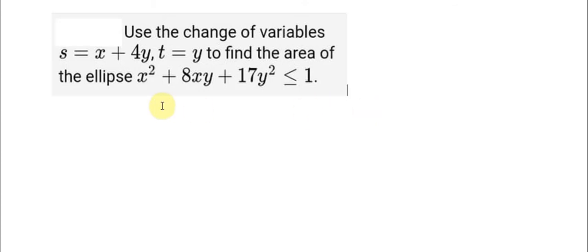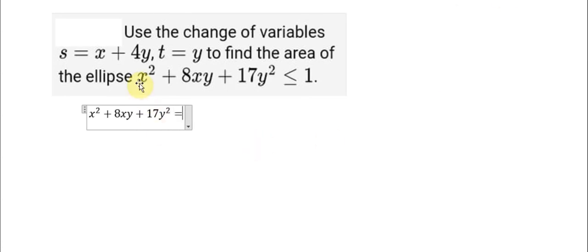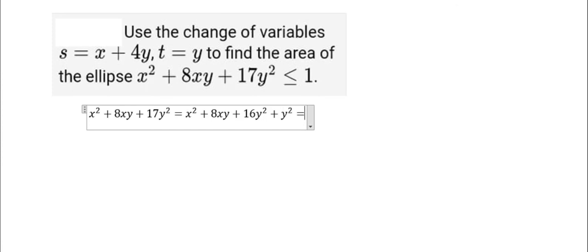First, we need to convert the ellipse into H and T variables. We can separate y squared, giving us s squared plus 4sy plus 16y squared. We can see this becomes s plus 4y squared, and y squared.